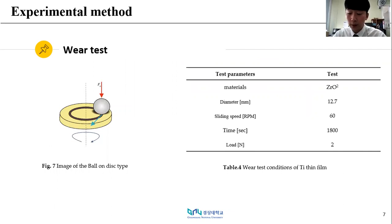Figure 7 shows the abrasion test was performed using a PD-102 type abrasion tester where test conditions of titanium thin film were shown in Table 4. The materials used in the test was zirconia ball with a diameter of 12.7 mm and a hardness of 1,400 HV. The experiment was conducted in a ball-on-disc type in which the ball was brought into contact with the sample surface to rotate. The experimental conditions were performed by setting a rotation speed at 60 rpm, an experimental time of 30 minutes and vertical load of 2 Newton.